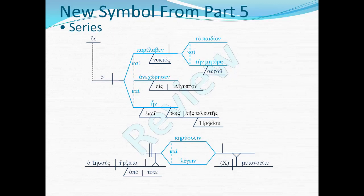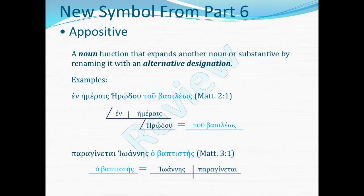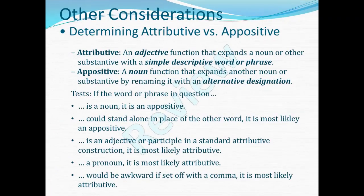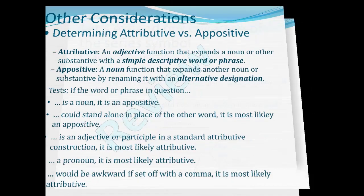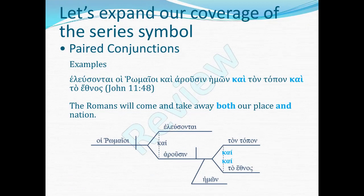A new symbol from part five was the series symbol, showing how we set up coordinate series of items. You see the light blue color to show the series. In part six, we learned about the appositive. The light blue color shows the appositives, and you notice the equal sign connecting the appositive to the word that it renames. We also had quite some discussion about how to distinguish between an attributive and an appositive, since these are often so similar. We expanded our coverage of the series symbol by showing quite a variety of paired conjunctions — pairs of conjunctions in light blue in a coordinate series symbol, showing how those pairs work together.